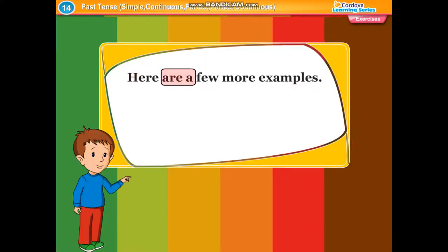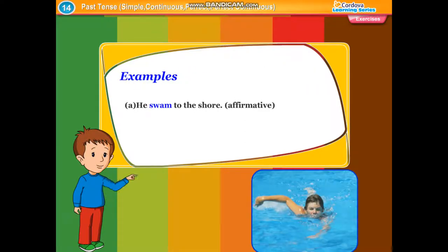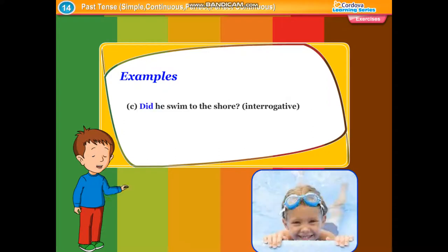Here are a few more examples. He swam to the shore — affirmative. He did not swim to the shore — negative. Did he swim to the shore? — interrogative.